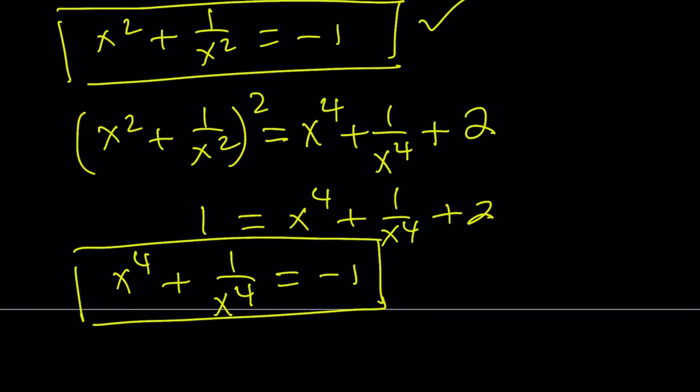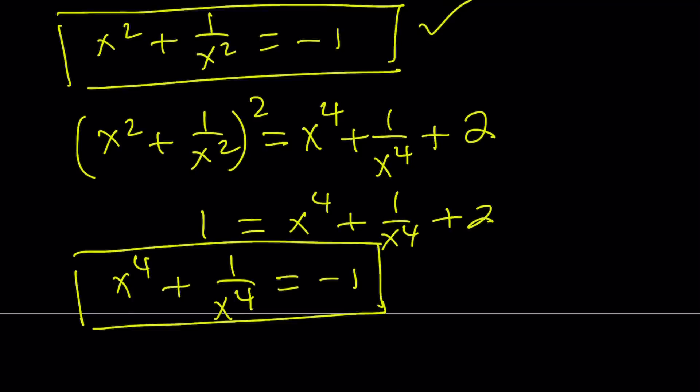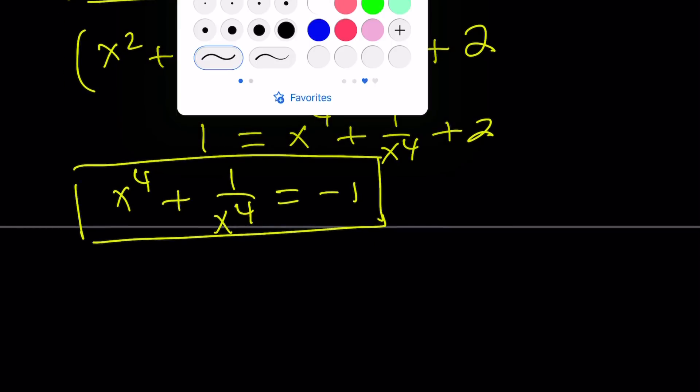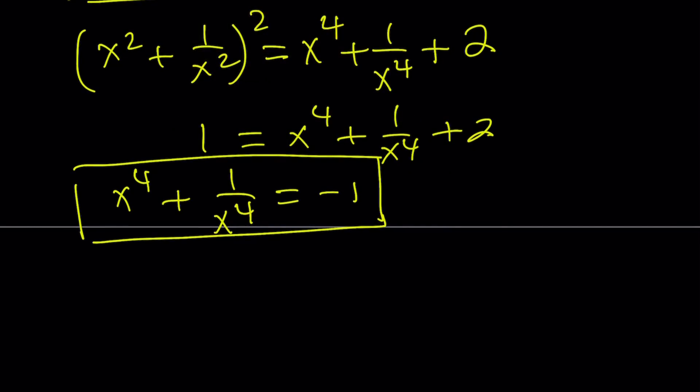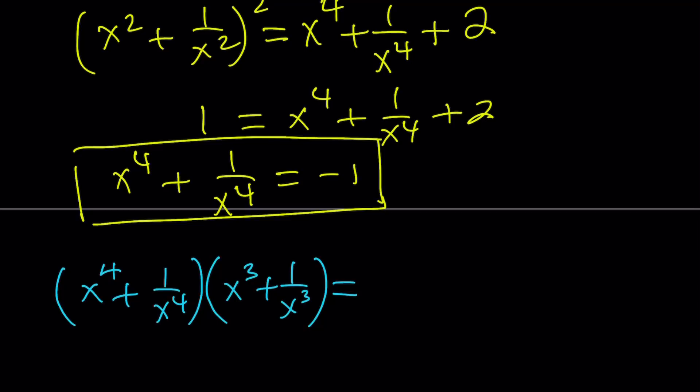So now we got the fourth powers, we got the third powers. Let's go ahead and put it together. So now I'm going to just multiply them. I'm not even thinking about an expansion formula. I'm just multiplying them because this is going to be fun. When you multiply these things, obviously, we're just going to use distributive property. You're going to get x^7.